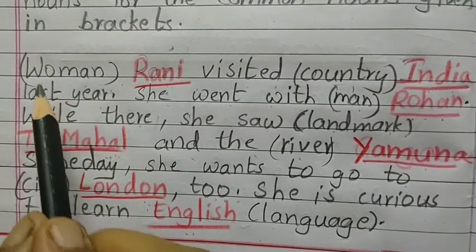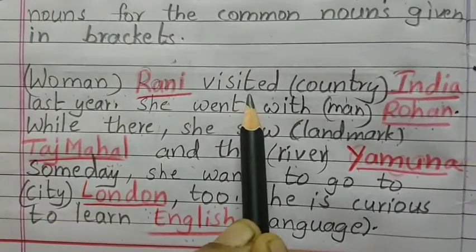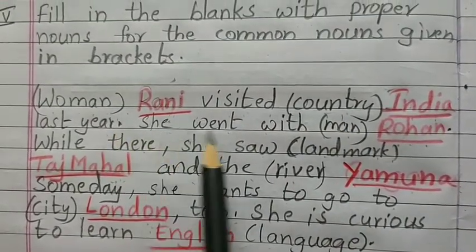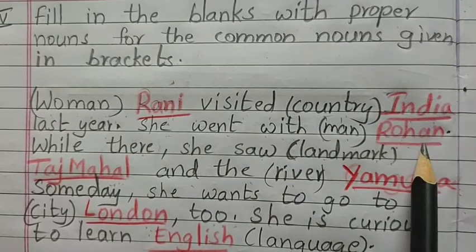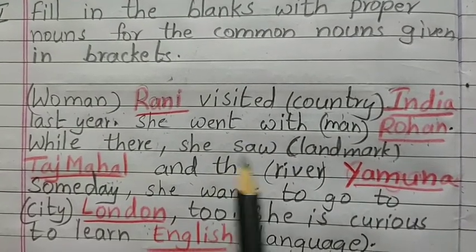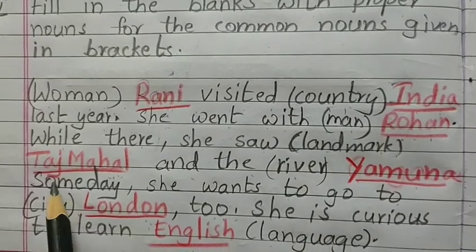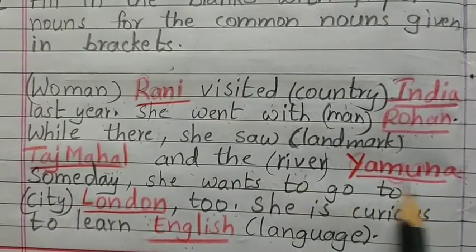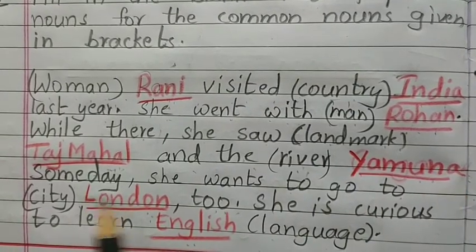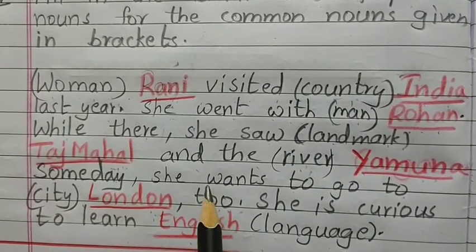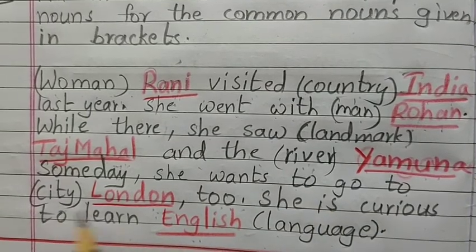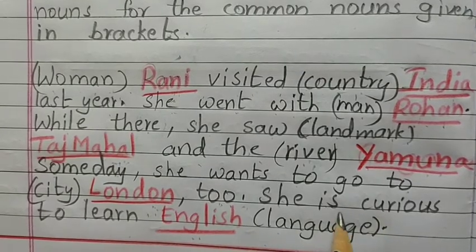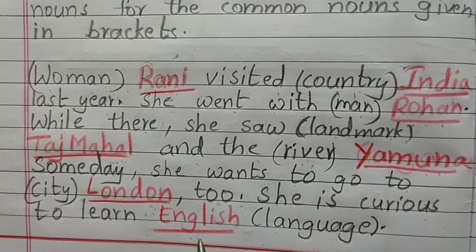Reading it again: 'Rani visited India last year. She went with Rohan. While there, she saw landmark Taj Mahal and the river Yamuna. Someday, she wants to go to city London. She is curious to learn English language.'